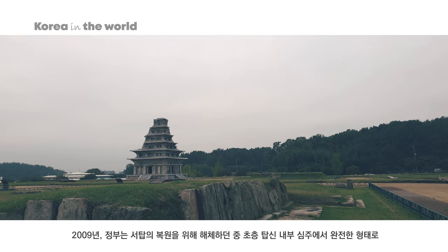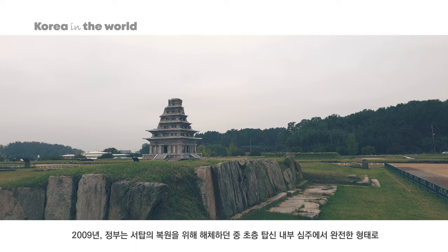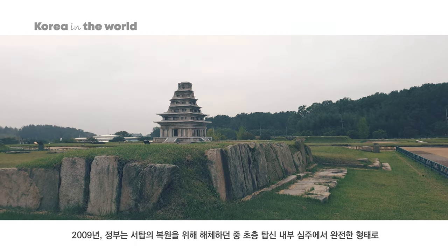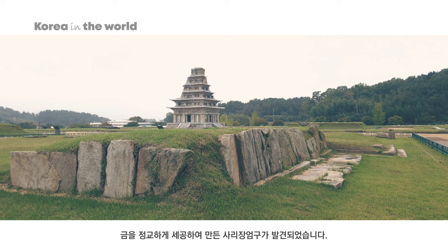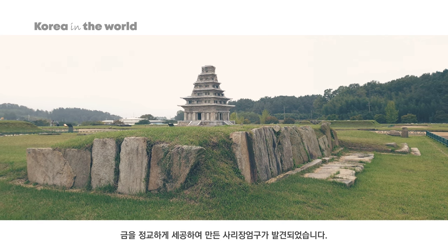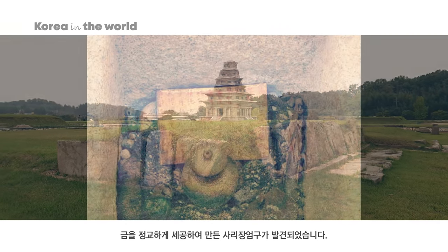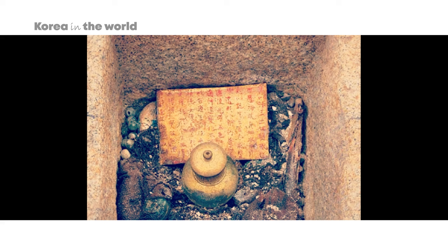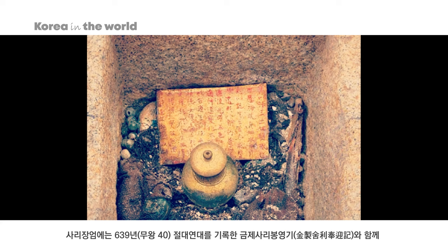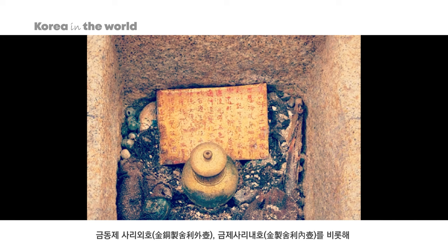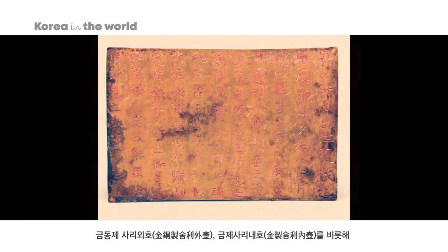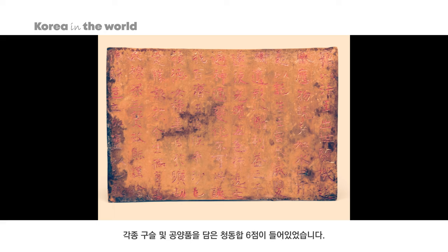2009년 정부는 석탑의 복원을 위해 해체하던 중 초층 탑신 내부 심주에서 완전한 형태로 금을 정교하게 세공하여 만든 사리장엄구가 발견되었습니다. 사리장엄에는 무왕 40년인 639년에 절대연대를 기록한 금제사리봉영기와 함께 금동제사리외호와 금제사리내호를 비롯해 각종 구슬 및 공양품을 담은 청동합 6점이 들어 있었습니다.